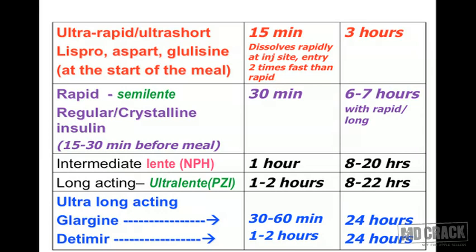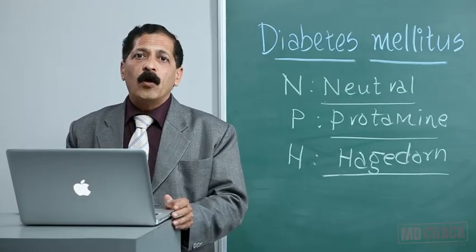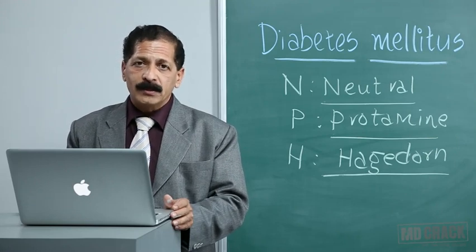The ultra-long-acting insulins include glargine and detemir. Glargine begins action in 30 to 60 minutes and detemir in one to two hours, but both maintain action for 24 hours. Their key feature is that they produce a flat, peakless dose-response curve — insulin levels are constantly maintained with no pronounced peak. This is why they are sometimes called 'peakless insulins.' We will continue the discussion on insulin preparations in the next session.